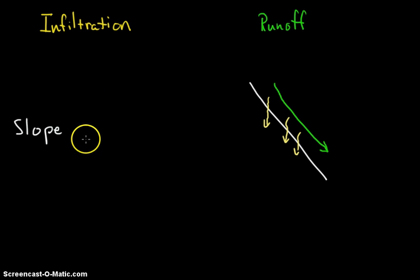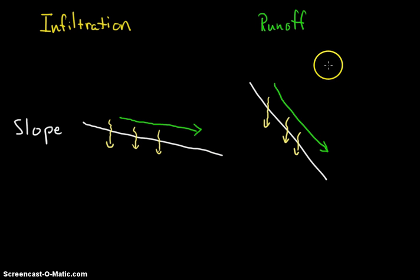On the other hand, if we have a shallow slope, then our runoff will be much slower and the water will move much slower. Therefore, the water will have more time to soak into the ground. So here we have a high amount of runoff and not so much infiltration. Here we have a slow amount of runoff and much more infiltration.